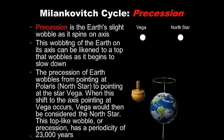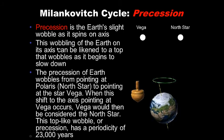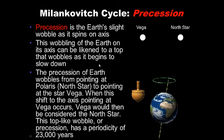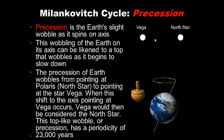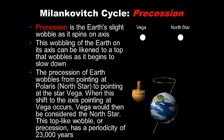Precession is Earth's slight wobble as it spins on its axis — likened to a top that wobbles as it spins. The precession of Earth wobbles from pointing at Polaris, the North Star, to pointing at Vega. When this shift occurs on the axis, Vega would then be considered the North Star. This top-like wobble has a periodicity of 23,000 years — so in about 23,000 years, Earth's axis will point to Vega, not the current North Star.